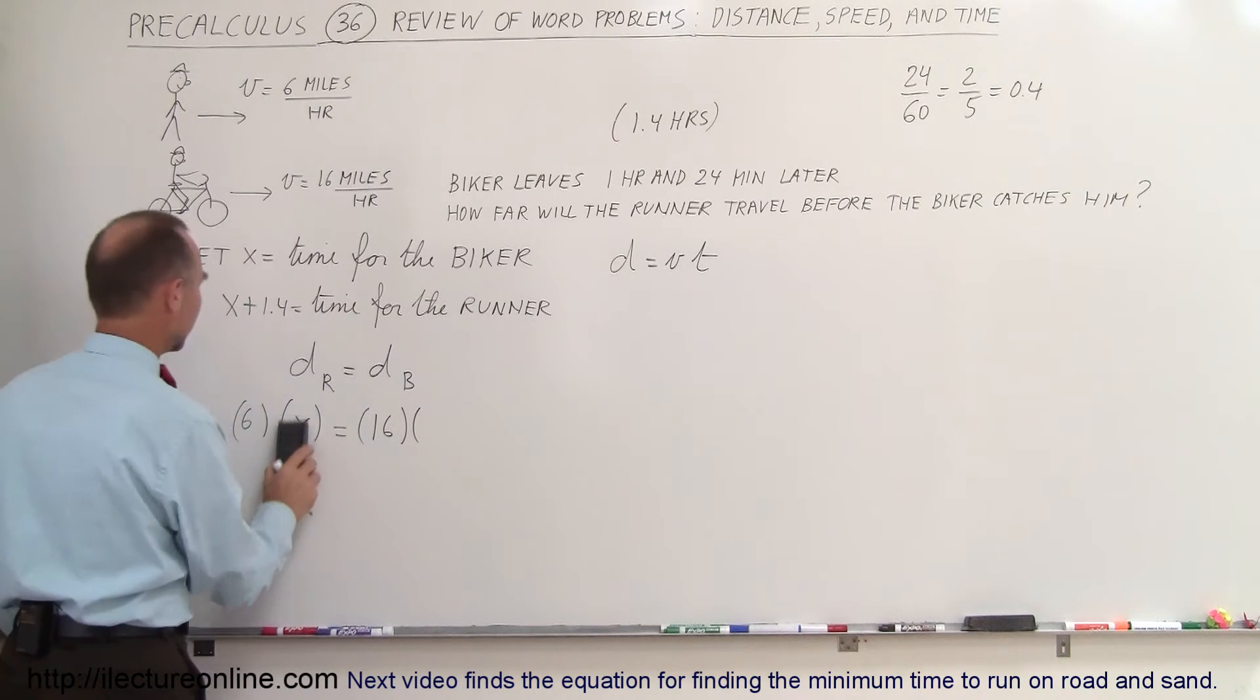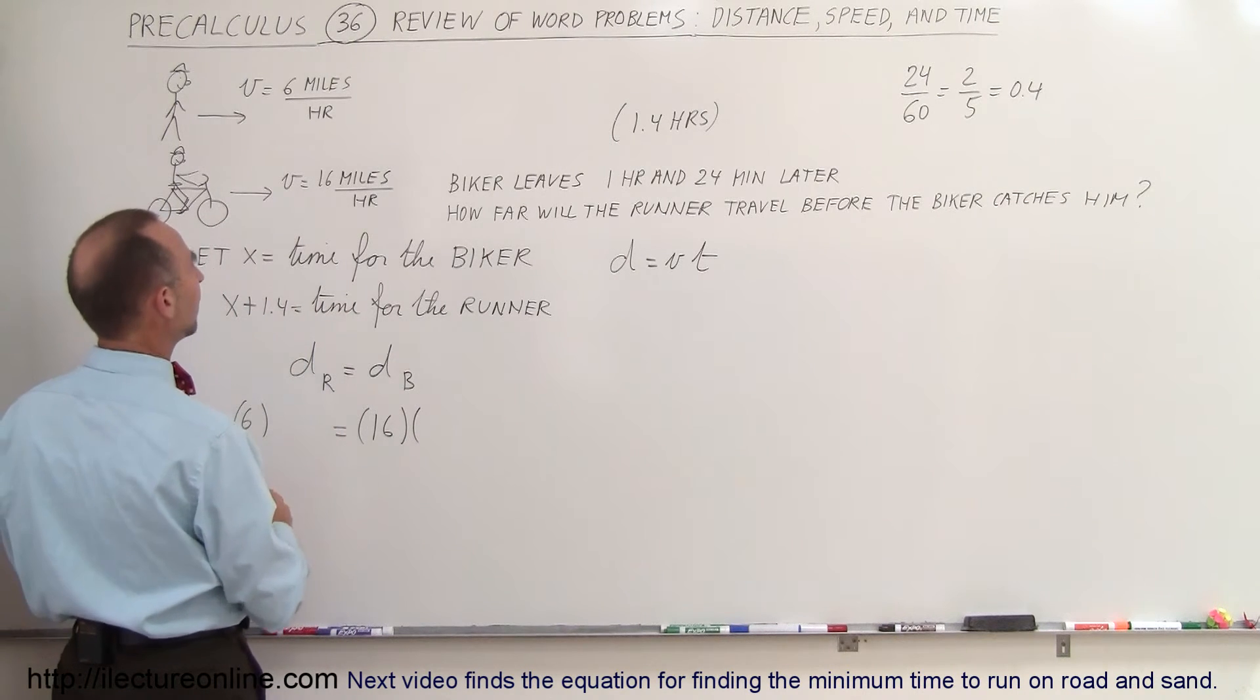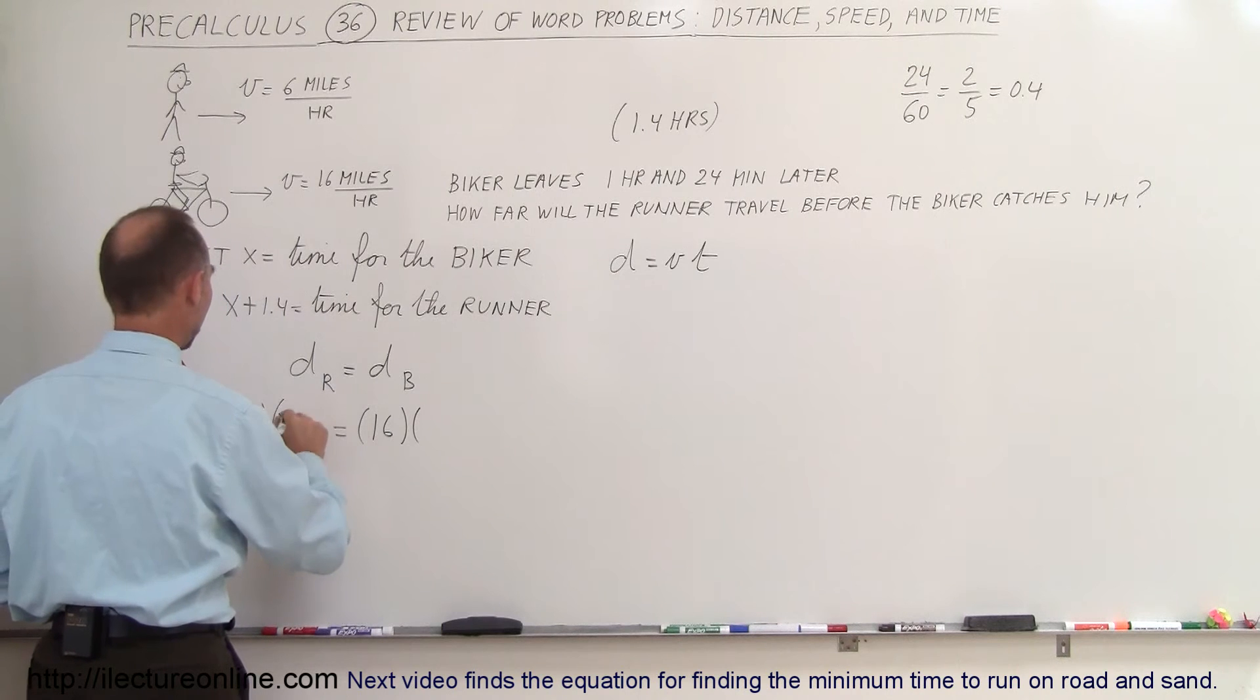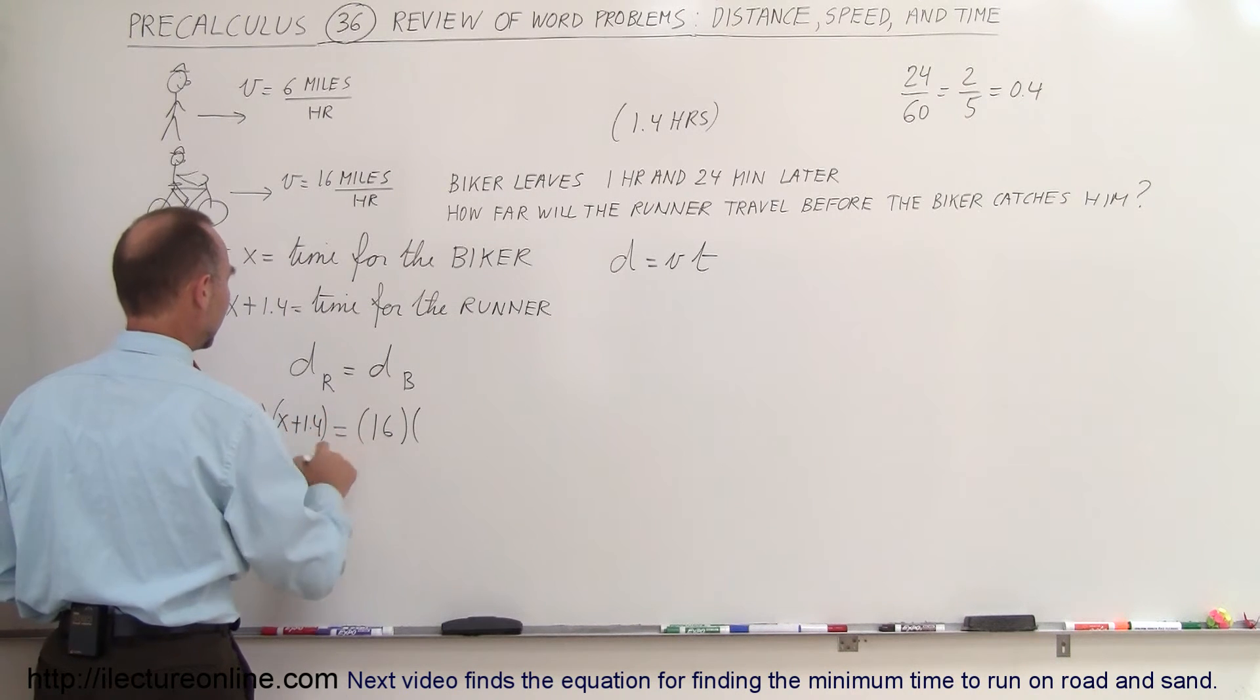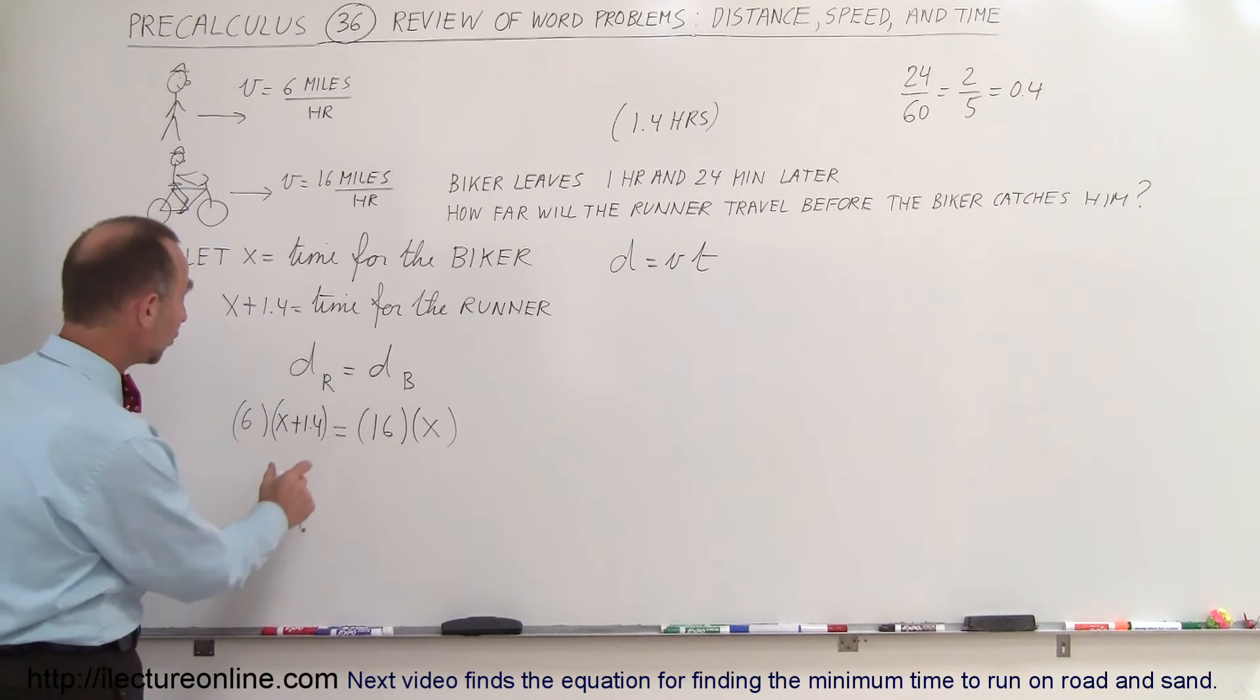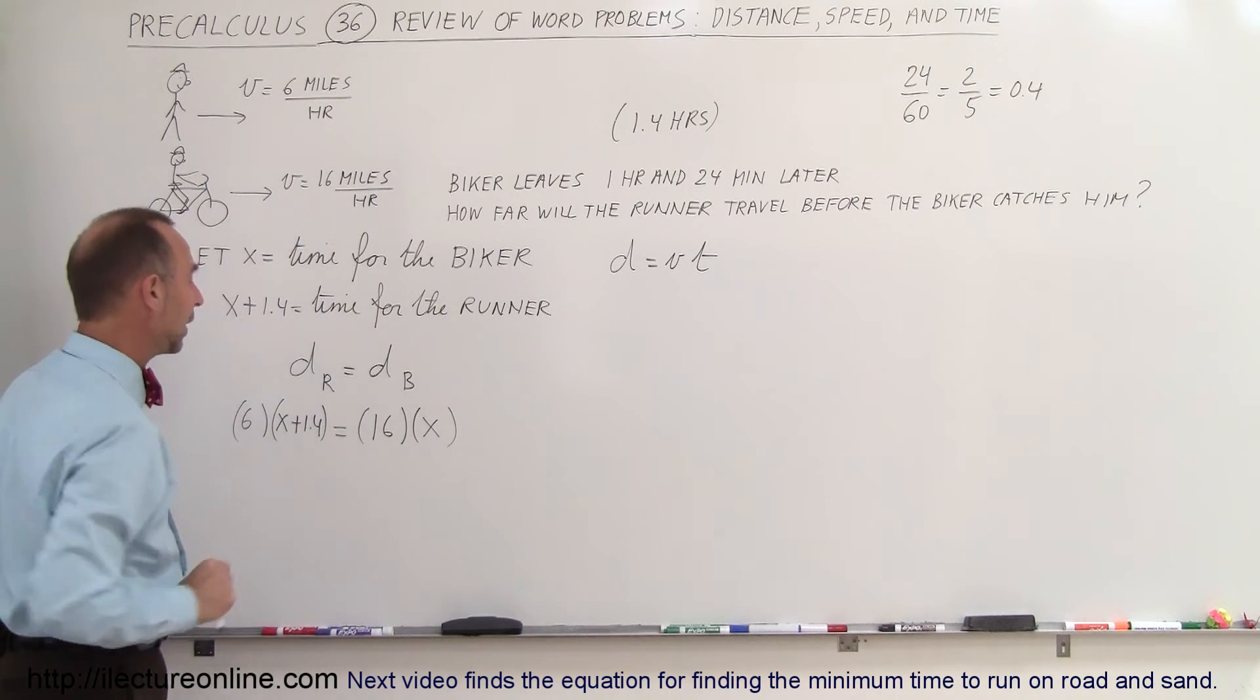Oh no, I got this wrong here. The runner spends more time, that's the biker, the runner spends more time on the road, so I want 6 times x plus 1.4 and 16 times x. That's the most appropriate one, right? Because the runner spends more time on the road than the biker.